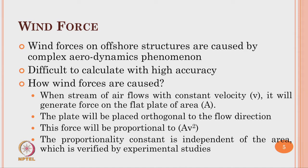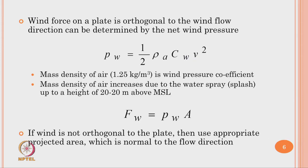When a stream of air flows with constant velocity V, it will generate force on a flat plate whose area is A. The area here is not the cross-sectional area but the area of exposure, which is considered normal or orthogonal to the flow direction. Therefore, the force will be proportional to A·v², where A is the exposed area and v is the wind velocity. The equation below estimates wind force on a plate kept orthogonal to the wind flow direction.